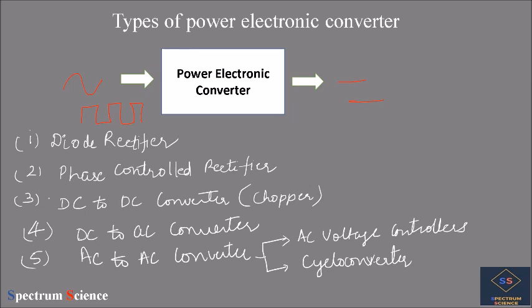The third type is the DC-to-DC converter or chopper, which converts DC of one amplitude to DC of another amplitude — used in DC drives, electric vehicles, and more. The fourth is the DC-to-AC converter, also known as an inverter, whose output AC amplitude and frequency can be varied depending on switching. The fifth type covers AC-to-AC converters, which include the AC voltage controller — where only the output AC amplitude is varied — and the cycloconverter, where both amplitude and frequency of the output AC can be varied.